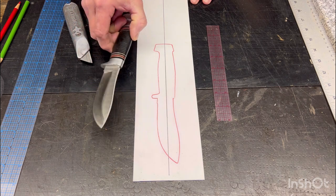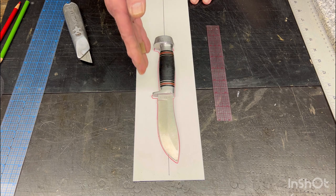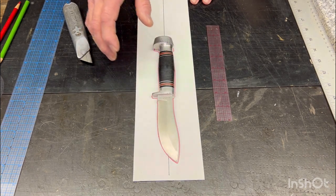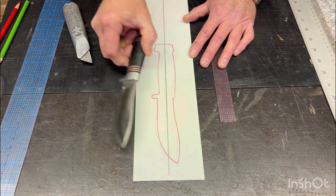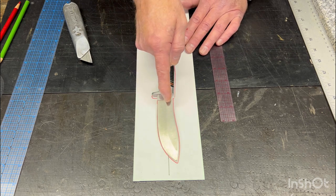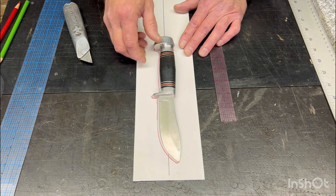So start with a very good tracing of your knife. Keep the pencil perpendicular to the edge and get a true representation of the knife itself. So in this case you'll notice the upswept blade. I center line it pretty much onto the blade and on the pommel.